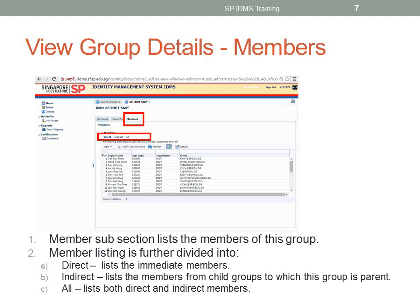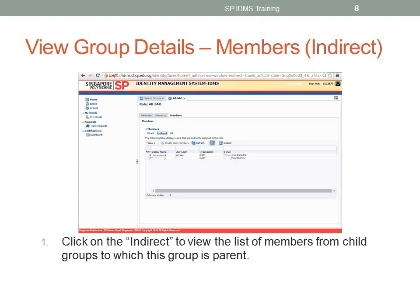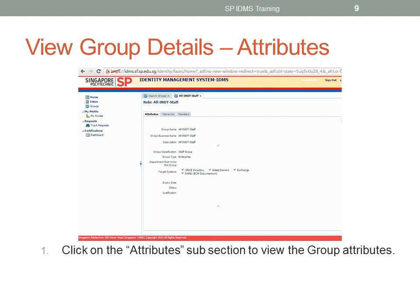This will be shown next. Click on the Indirect subsection to view the list of members from child groups to which this group is parent. To view the group attributes, click on the Attribute subsection.